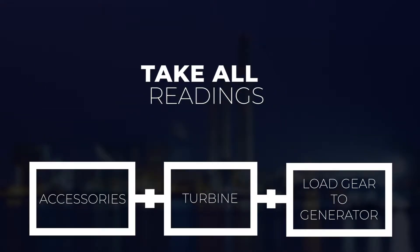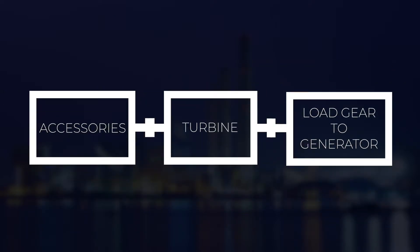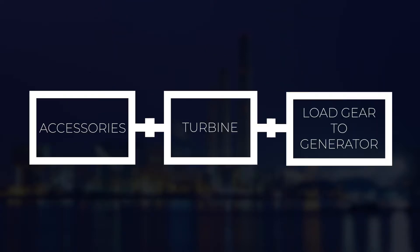With any machine train alignment, we want to take all of our readings first. This allows us to see the alignment as a whole and then work off of that. We will take the alignment readings in between the accessory skid and the turbine skid, and then take the alignment readings in between the turbine and the load gear to generator skid.